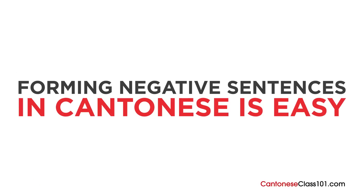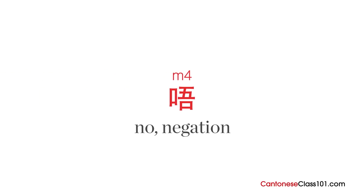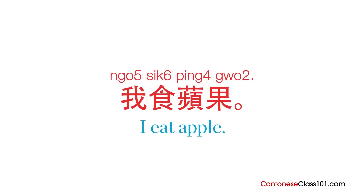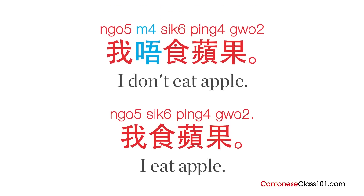Forming negative sentences in Cantonese is easy. In most cases, we just need to add the character for 'no' or negation, 唔, in front of the verb. Let's use the sentence 我食蘋果 — I eat apple — as an example. To make it negative, just add 唔 in front of the verb 食, giving us 我唔食蘋果 — I don't eat apple.